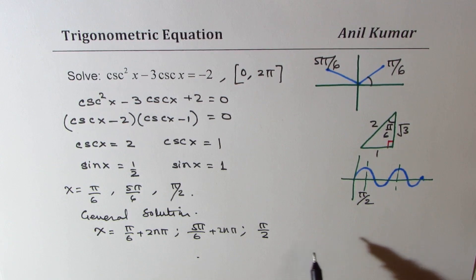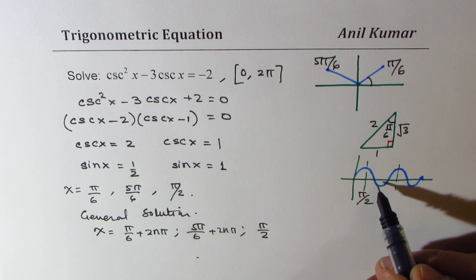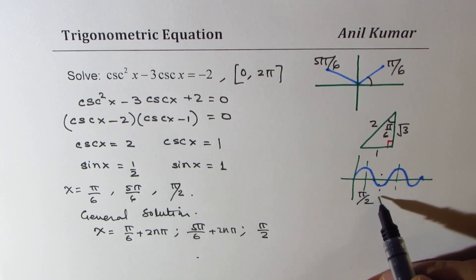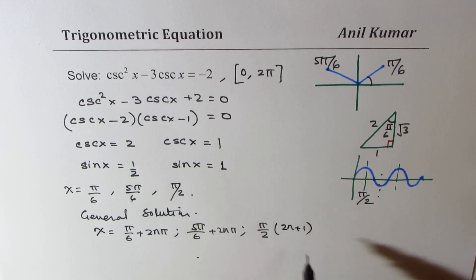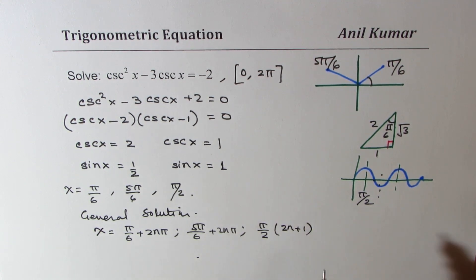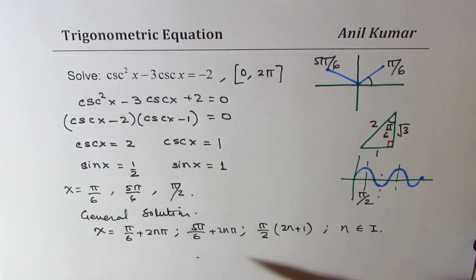Now when you do pi by 2, we are looking for pi by 2, 3 pi by 2, so alternate. So we could write this as pi by 2 times 2n plus 1. So that could work where n belongs to integers. So that could be the general solution for your equation.